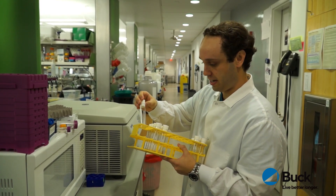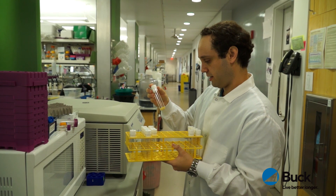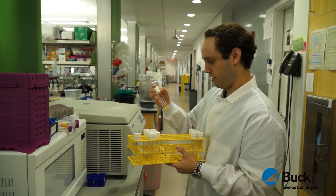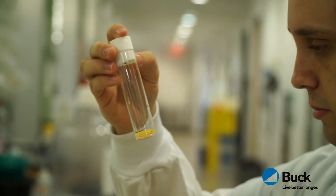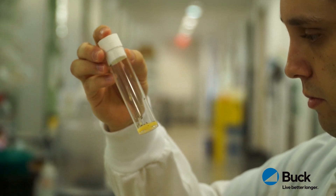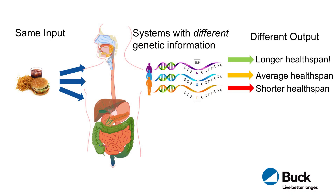In looking at how food might influence the human body as a system, I recognize that there are a number of other factors that could also influence how food is responded to by an individual. For example, there are different genetic differences between individuals. Three different individuals with different genetic codes might have a different change in health span in response to the same diet — a longer, average, or even shorter health span from someone eating the exact same foods.